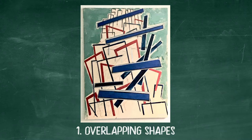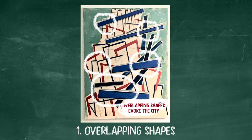Here in an abstract picture of skyscrapers in Manhattan, see how the overlapping shapes suggest this clutter of one building sitting in front of another, going from foreground to background.